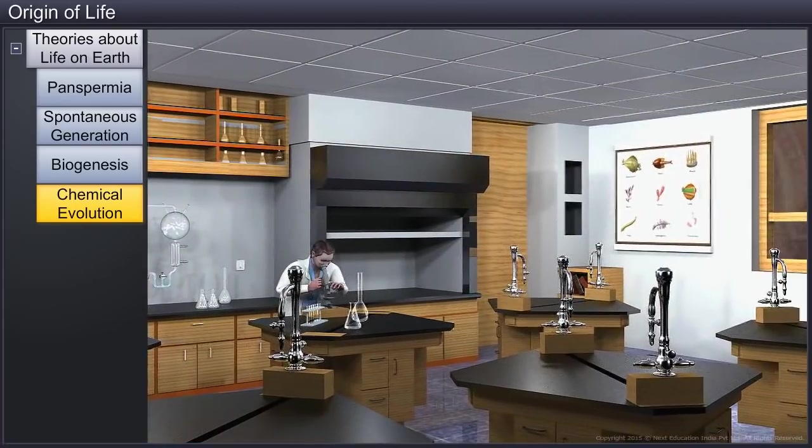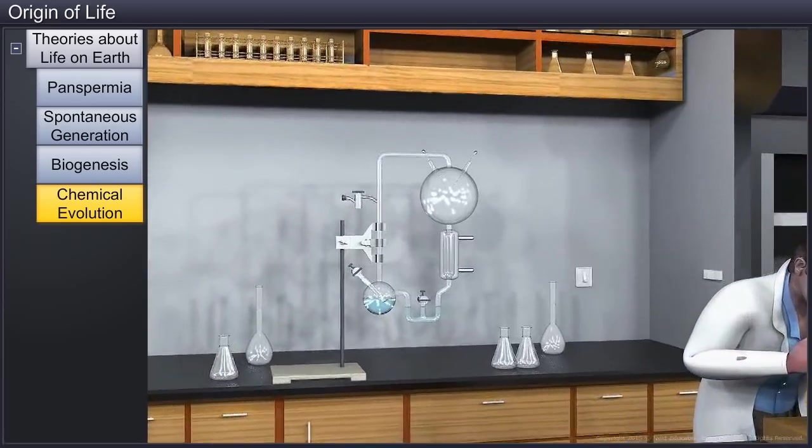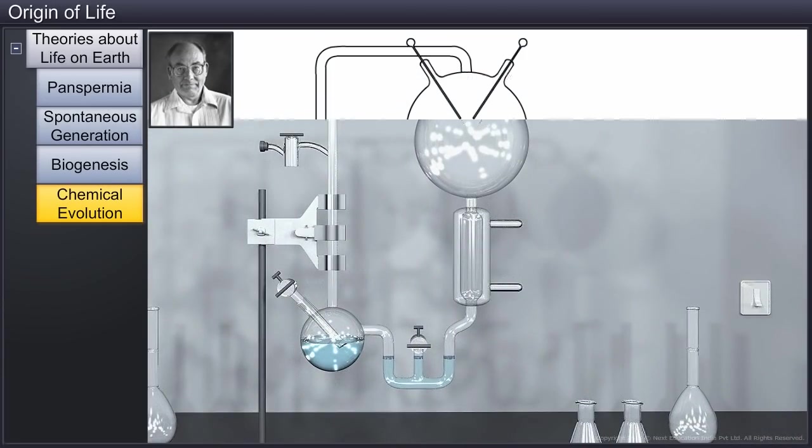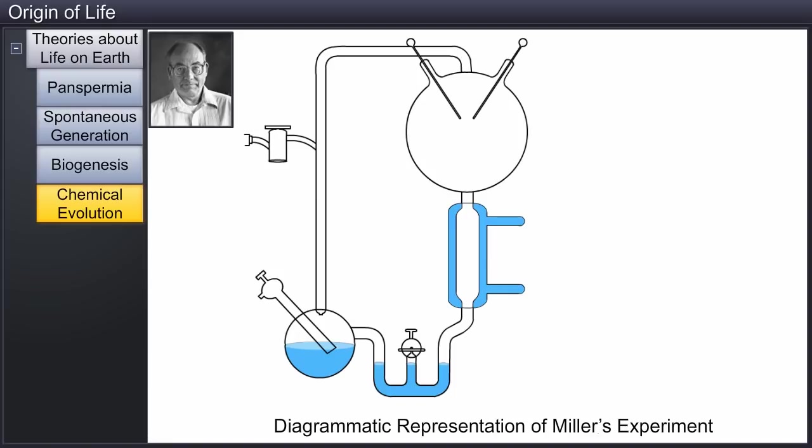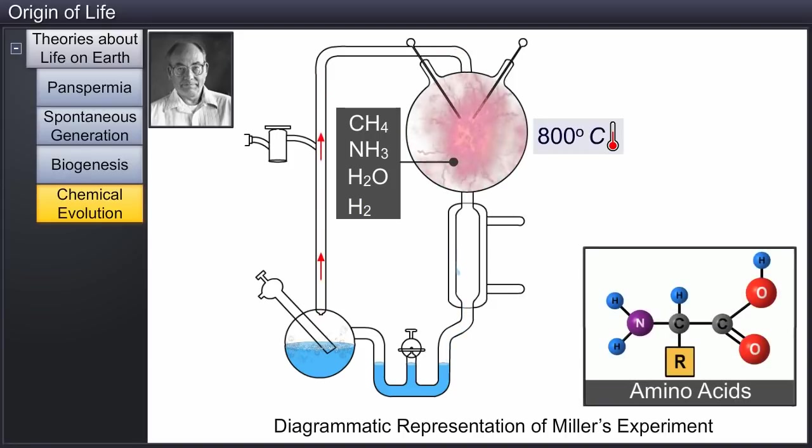In 1953, American scientist Stanley Lloyd Miller recreated these conditions in a laboratory. He created an electric discharge in a closed flask containing methane, ammonia, hydrogen, and water vapor at 800 degrees centigrade and observed the formation of amino acids.